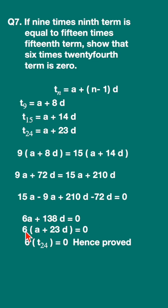Take out 6 common. You will get 6 times (a plus 23d) equals 0.